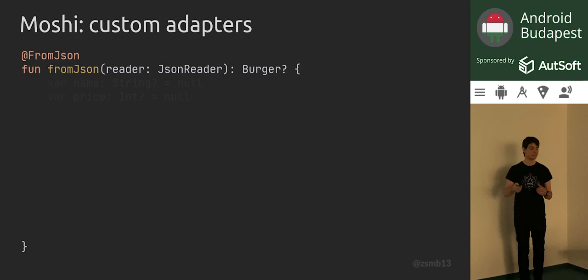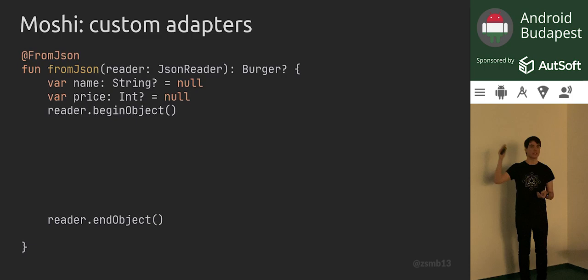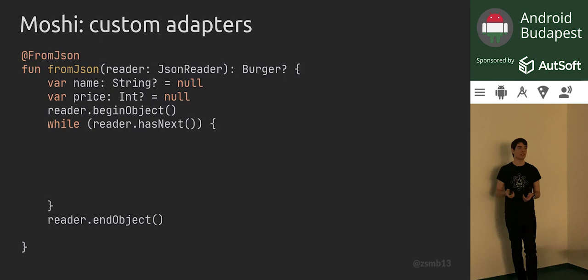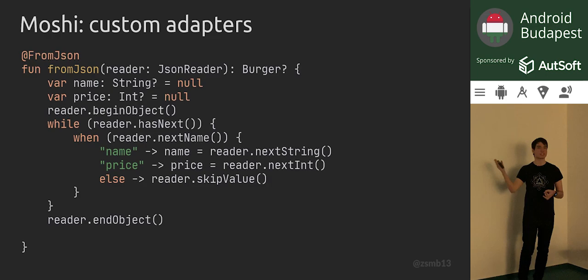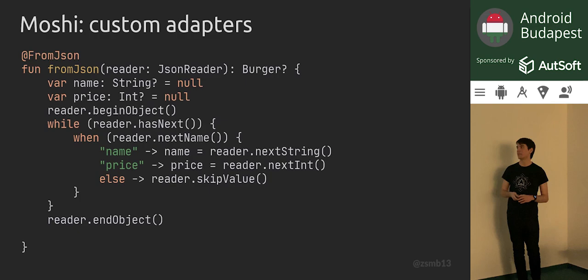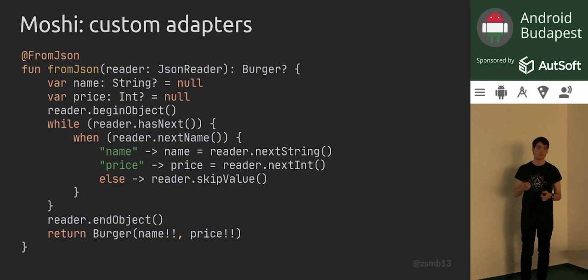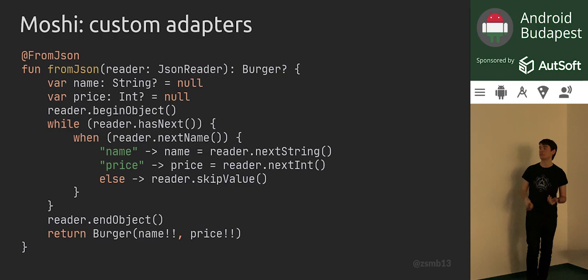One way to parse a burger is to create two local fields for the values we're trying to get from the JSON, consume the start and end marks — the curly braces — then loop through all the fields in the JSON object. For each field, we check the name: if we find 'name' or 'price', we read the value as a string or int respectively and save into the local variables. At the end of the method, when we're done parsing everything, we create a burger instance by passing in the two values we've acquired. You can write arbitrary logic in here if you need to fix mismatching types in the API.